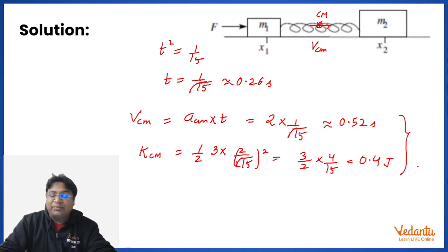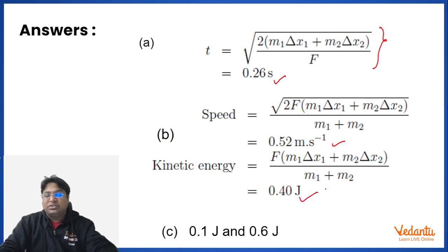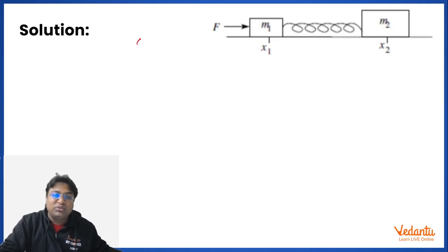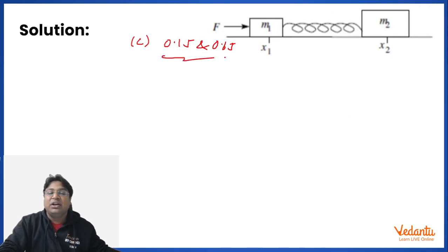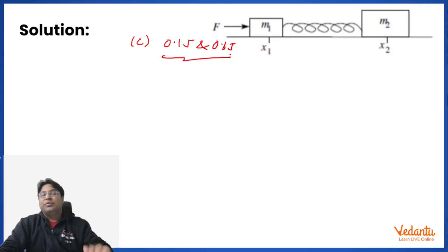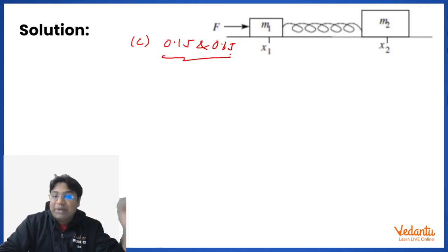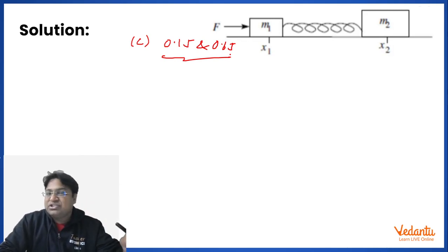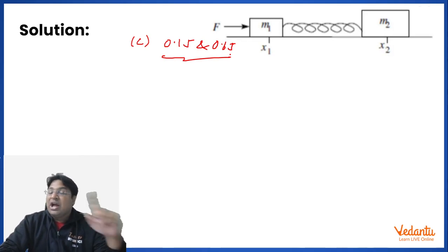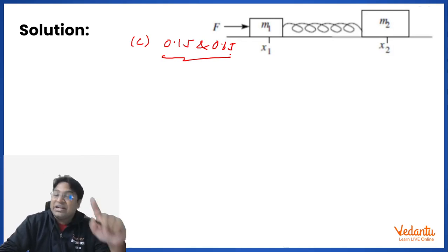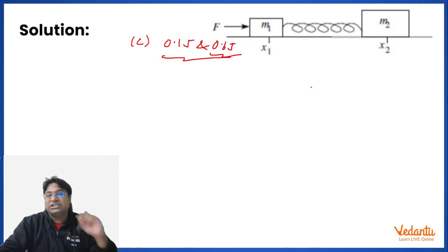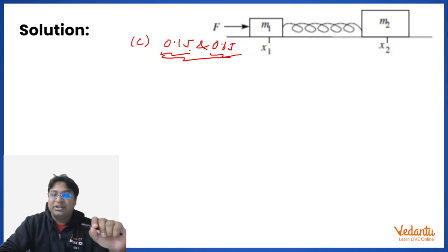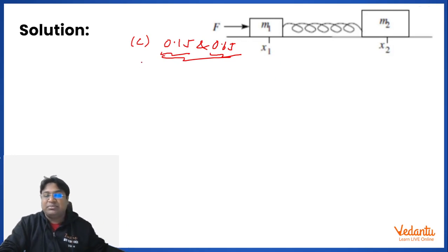Those two values are the answers to part B. For part C, two answers are accepted: 0.1 J and 0.6 J. The phrase 'energy stored in the system' can be interpreted as either the sum of kinetic energy of the blocks plus potential energy in the spring, or as the energy stored in the spring only.